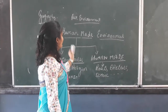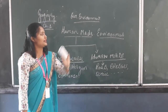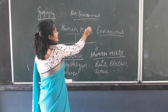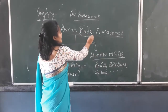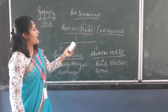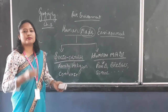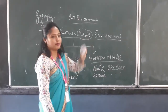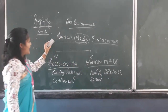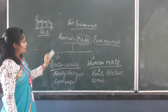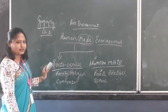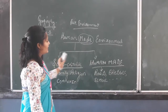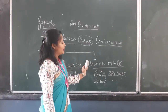When we talk about human made environment, human made means something that has been made by human and that has changed the environment. I have divided these into two things which is in your book. First is social culture, and next you have human made.